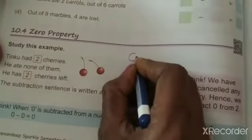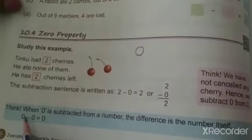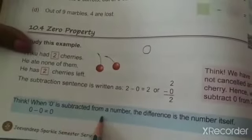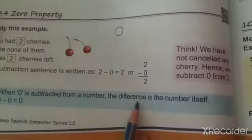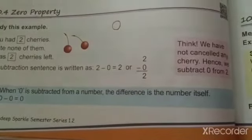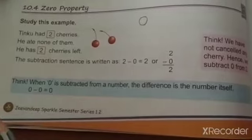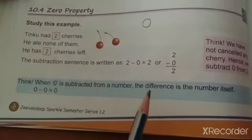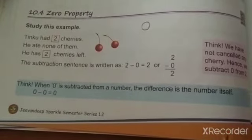See children, this is zero. So think when zero is subtracted from a number, the difference is the number itself. Means when we subtract the number with a zero, the answer is the number itself only.